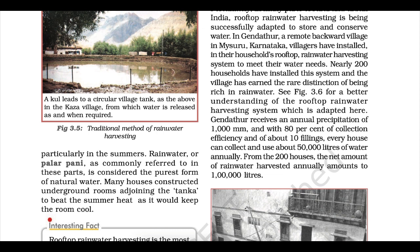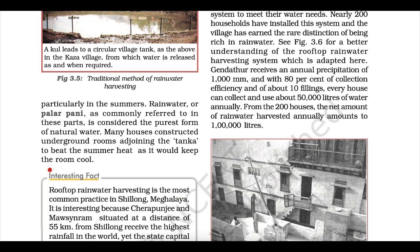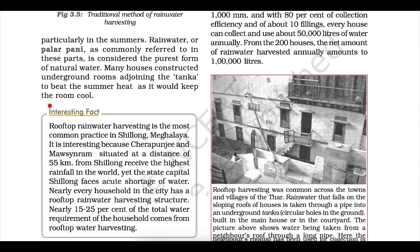Gendathur receives an annual precipitation of 1,000 mm and with 80% collection efficiency and about 10 fillings, every house can collect and use about 50,000 litres of water annually. From the 200 houses, the net amount of rainwater harvested annually amounts to 1 lakh litres.